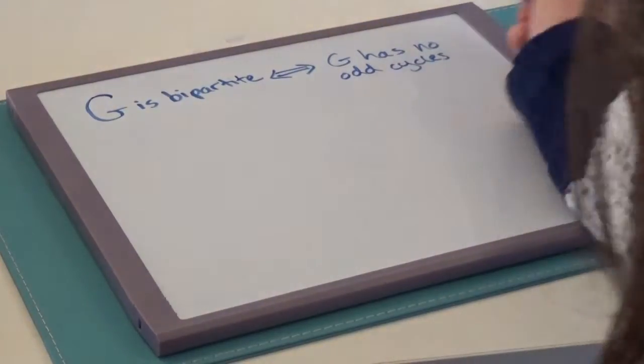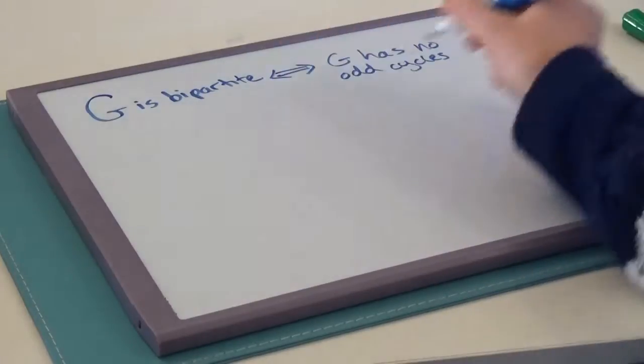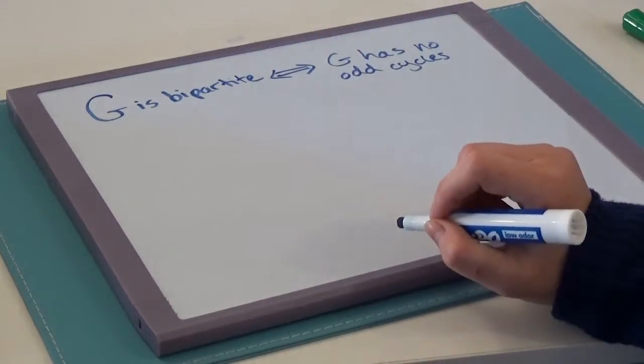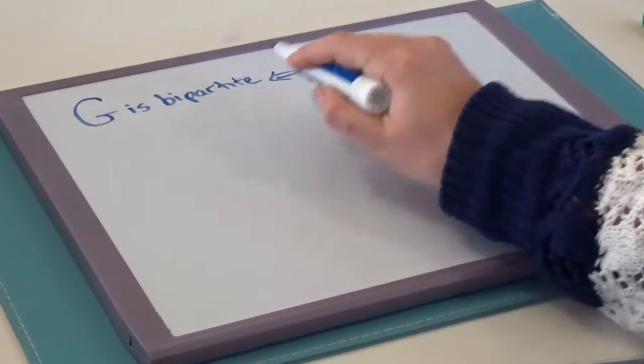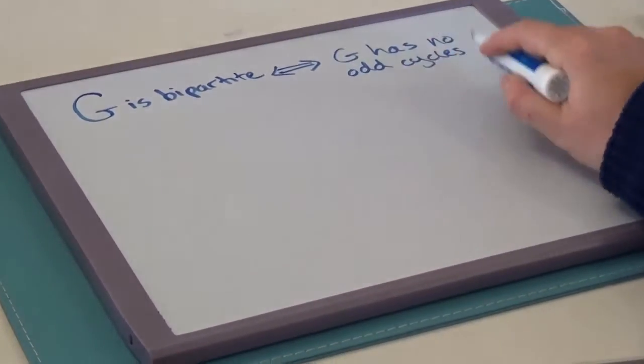In fact, I made an entire video just on this exact if and only if statement. So we could say G is bipartite if and only if G has no odd cycles.